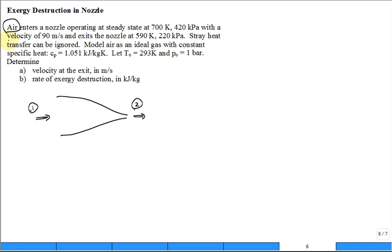Ideal gas. It comes in at a temperature one of 700 kelvin and a pressure one of 420 kPa. It goes out at also velocity one, 90 meters per second. The temperature at two is 590 kelvin and the pressure at two is 220 kilopascal. Look at those numbers. Temperature goes down. Pressure goes down. Does that make sense? Yeah, I think it makes sense.